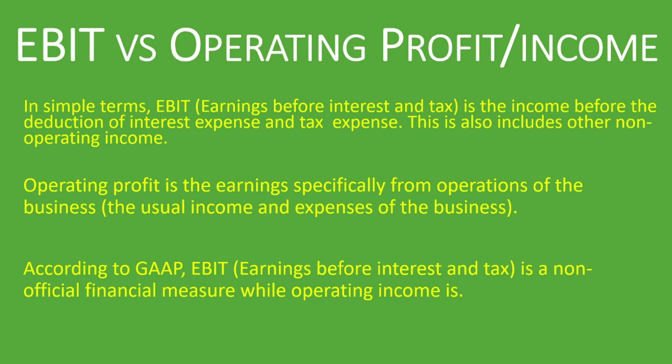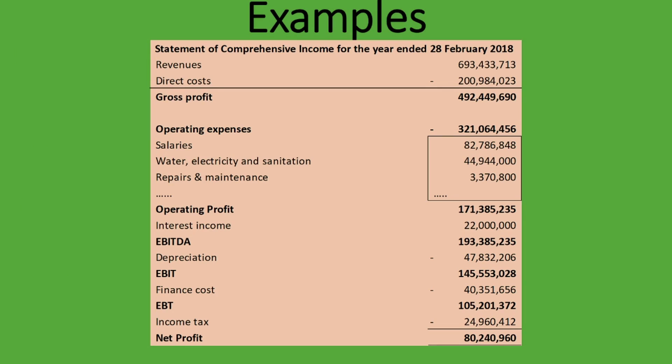So you'll see operating income or operating profit in many financial statements. They may not specifically call it operating income or operating profit, but you will understand what it is when you see it. So those are the differences between the two. Let's get into it and see some examples.